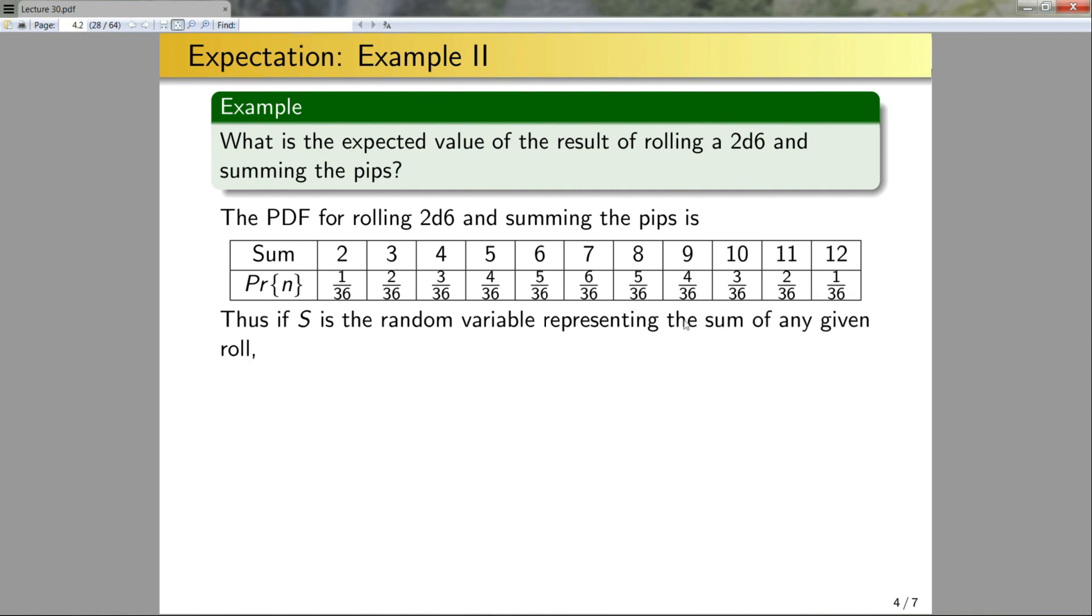So thus, if S is the random variable representing the sum of any given roll, the expected value will simply be this E of S, which again is the sum of s times the probability that S is equal to s over all of the s's in R. And this is simply the sum of the top rows times the bottom row here. So 2 times this plus 3 times that plus 4 times this plus 5 times that, etc. So I don't really want to compute that, right? Like I could do it in Excel if I plugged it in. But say if I didn't have a computer and I wanted to compute this quickly without doing all this god-awful algebra.